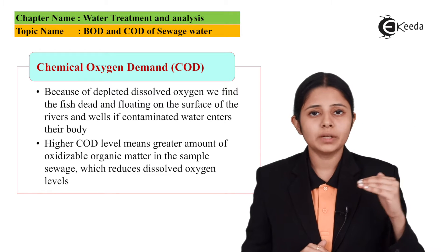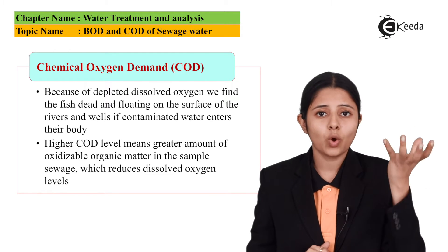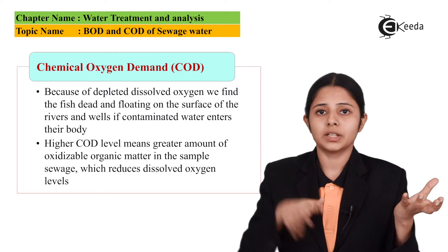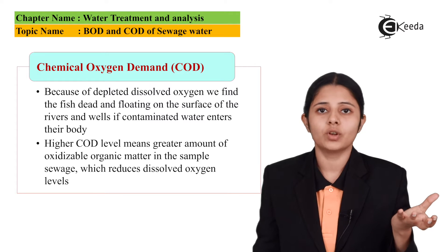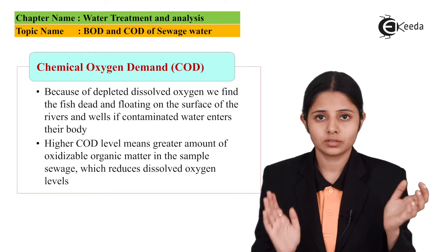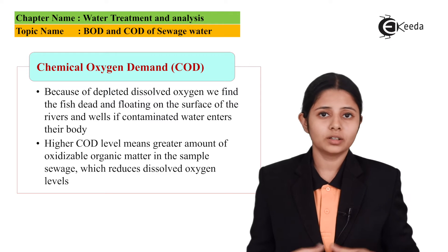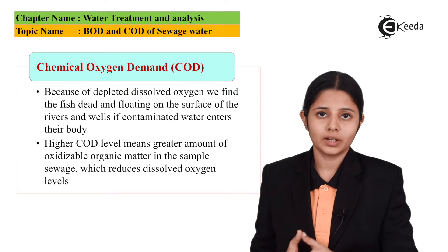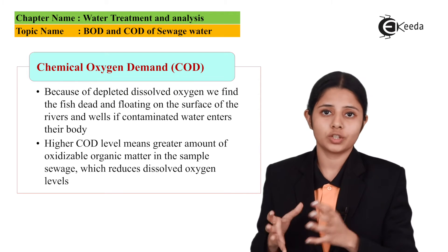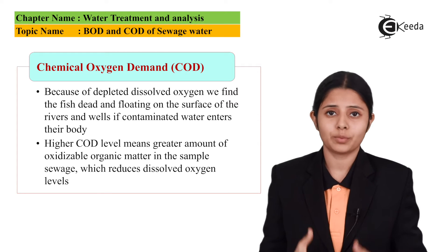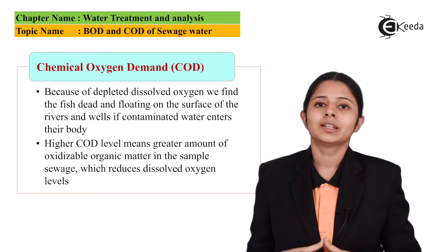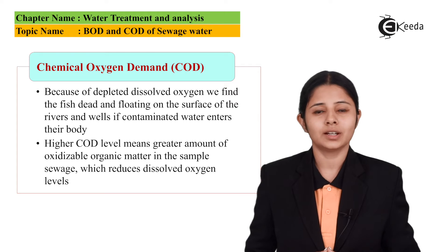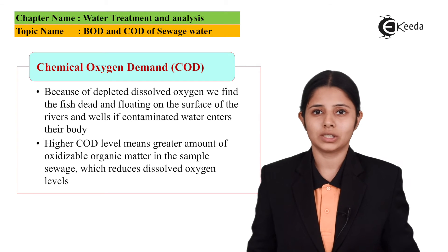Higher COD means a higher level of oxidizable organic matter, which consequently means reduced levels of oxygen. In this session, we learnt about BOD and COD — biochemical oxygen demand and chemical oxygen demand — and what exactly happens in the process. Thank you so much for watching this video. Stay tuned to Ikeda and subscribe to Ikeda.